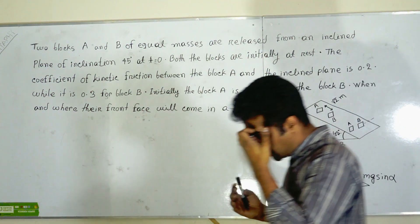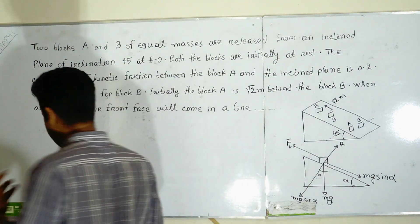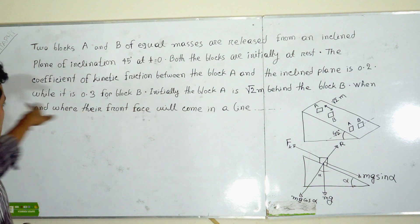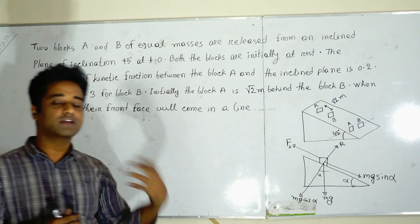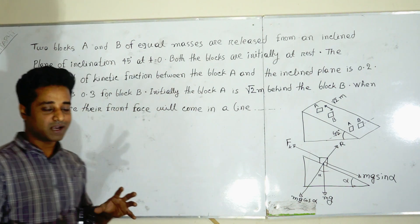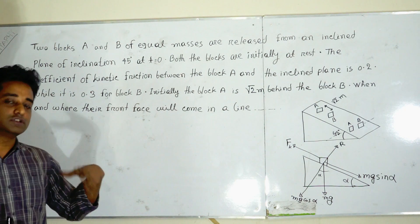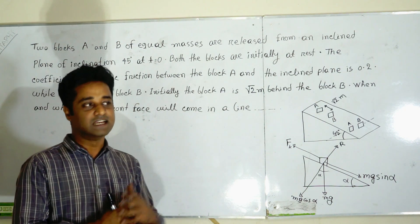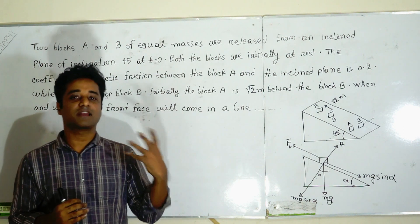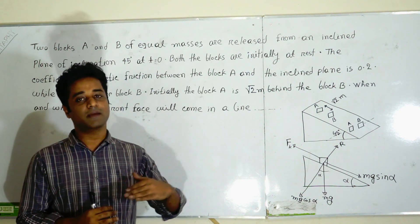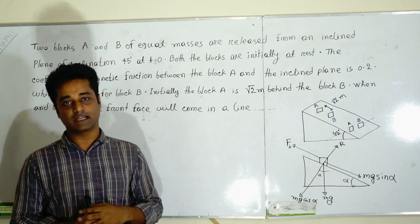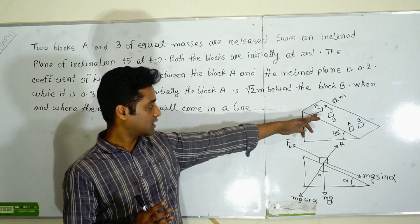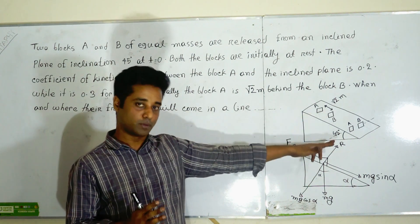So, block A and B of equal masses are released from an inclined plane of inclination 45°. At t equal to 0, A and B are both at rest. There is an inclined plane at 45°. They are going down the incline.